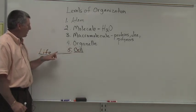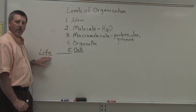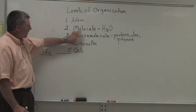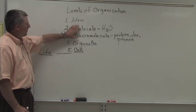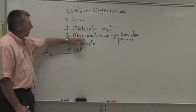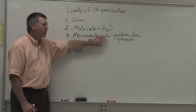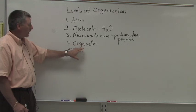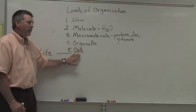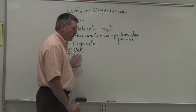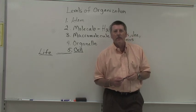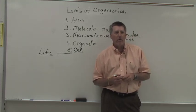Organelles by themselves do not demonstrate the characteristics of life. But when we bring all these together, molecules made of atoms and macromolecules, which are very large molecules that can be components of organelles and then different organelles working together, we get the cellular level of organization. Now we have life, something that can demonstrate those characteristics of life that we talked about before.